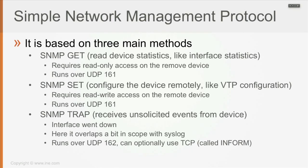We have what is called the SNMP GET, which is an action performed by the SNMP manager against the SNMP agent to read device statistics — like, for example, interface statistics. This requires read-only access on the remote device, on the SNMP agent, and this traffic runs over UDP 161.